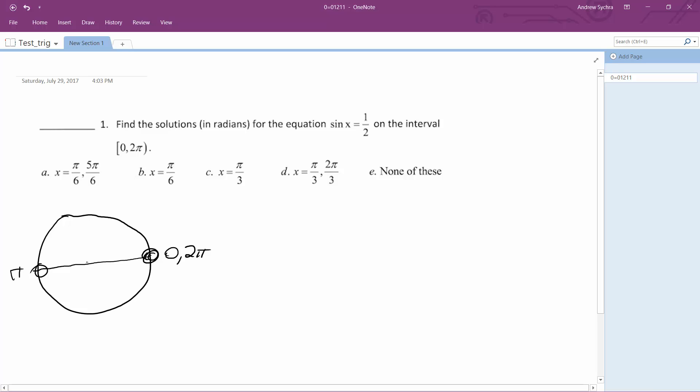and sine is only positive from 0 to pi, and the reason for this is because sine is y over, well excuse me, not y over x, I'm sorry, y over r. Y over r. X is here, but we don't need x.